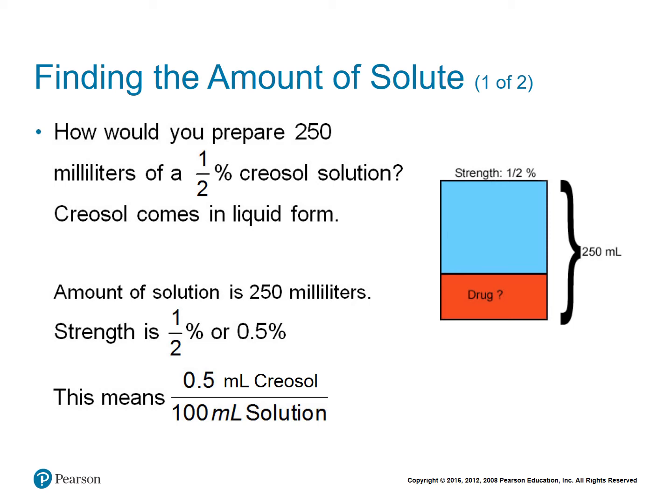In this example, we're going to figure out how to prepare 250 milliliters of a 1.5% creosol solution. Creosol comes in liquid form. The amount of the solution is 250 milliliters, and the strength is one-half percent — written as a decimal: 0.5%. Because it's a percent, 0.5% means 0.5 out of 100, so we have 0.5 milliliters of our drug over 100 milliliters of solution. In the strength equation, both units are milliliters since they're both liquid.